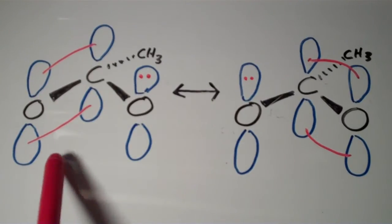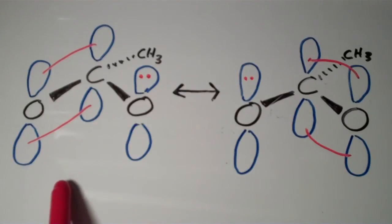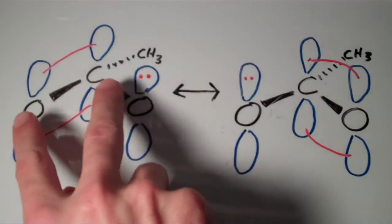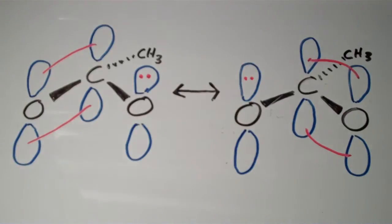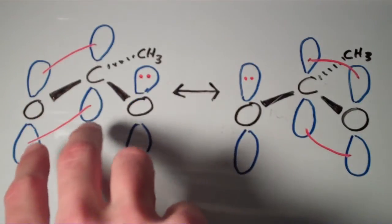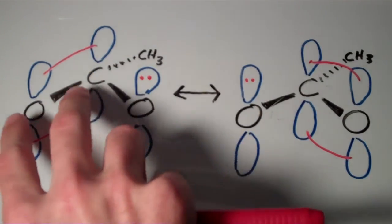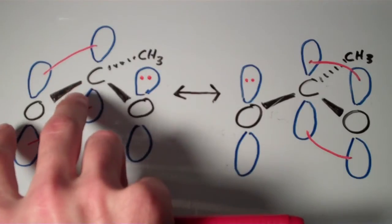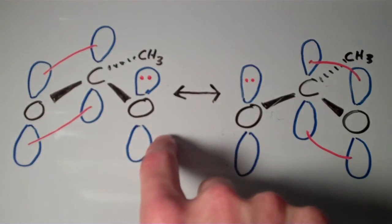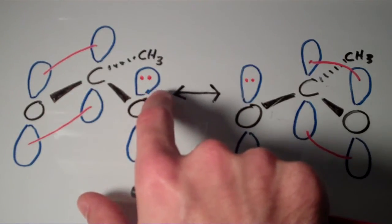So let's focus on the resonance form on the left. In the resonance form on the left, these two p orbitals are overlapping to form a pi bond. Now, it doesn't look like they're overlapping in this picture, but for clarity's sake, I've drawn them separately. So these two orbitals are overlapping to form a pi bond, while this p orbital has an electron pair in it.